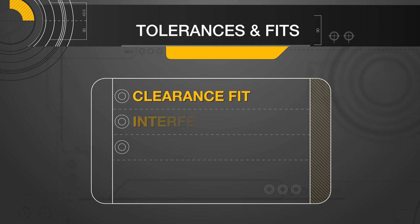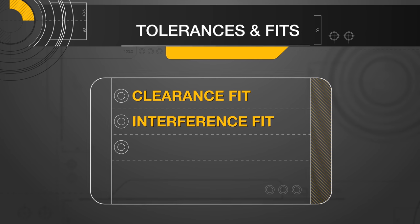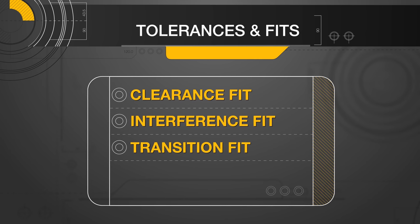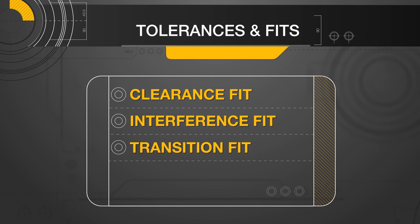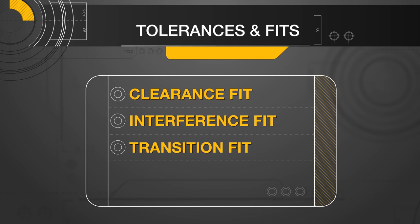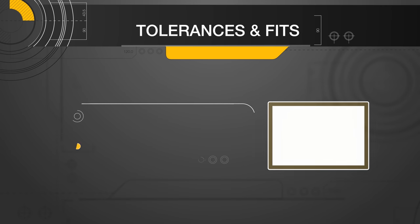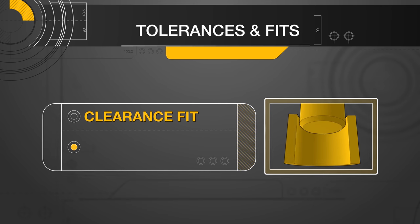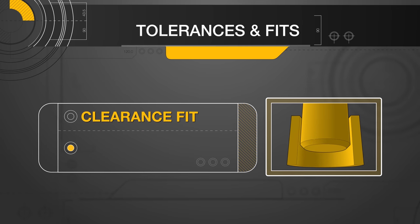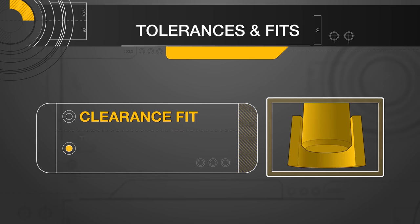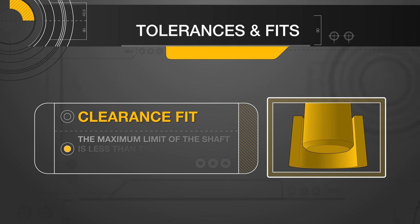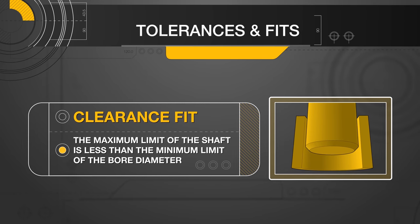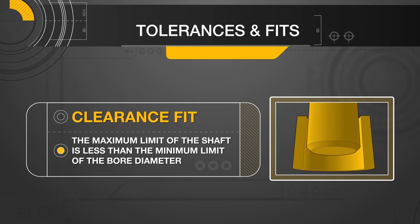The clearance fit, interference fit, and transition fit can either assist in assembly or prevent them from being disassembled easily. A clearance fit ensures a shaft can be freely inserted into the intended bore. This generally means the maximum limit of the shaft is less than the minimum limit of the bore diameter.